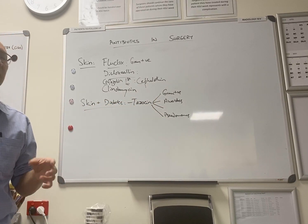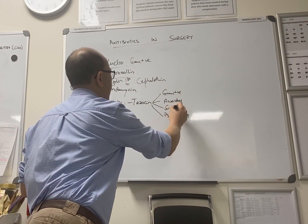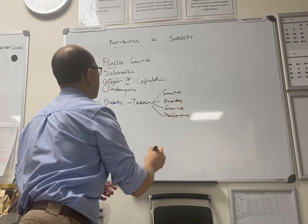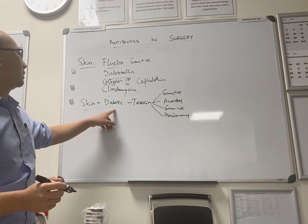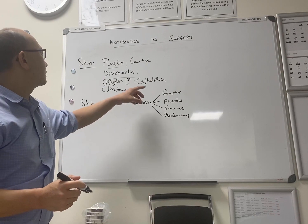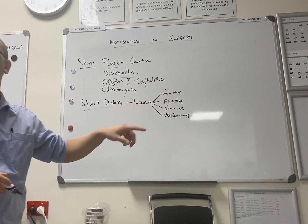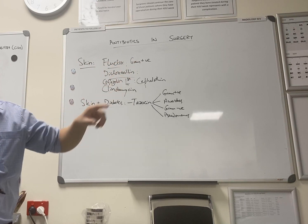What else? Yeah, gram negative. So that's why, you know, in a diabetic with a soft tissue infection, we want to cover all these things now. We don't just want to cover gram positives.